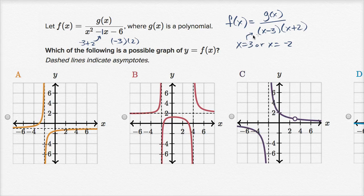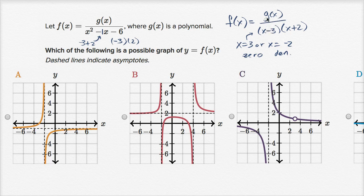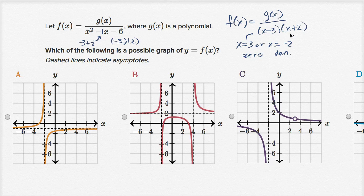When the denominator is zero, that tells us we're either going to have a vertical asymptote at that point, or a removable discontinuity. The way it would be a removable discontinuity — say at x equals three — is if g of x could be factored into x minus three times other stuff. If x equals three does not make g of x equal zero, or g of negative two does not equal zero, then these would both be vertical asymptotes.